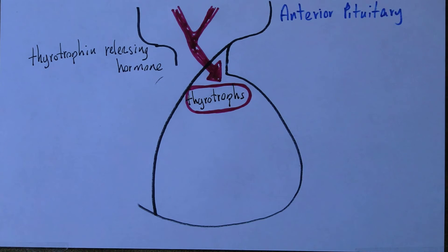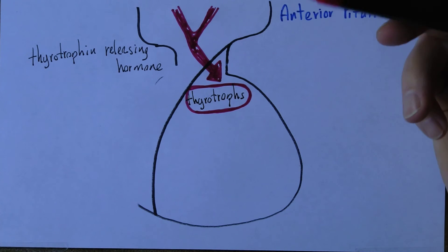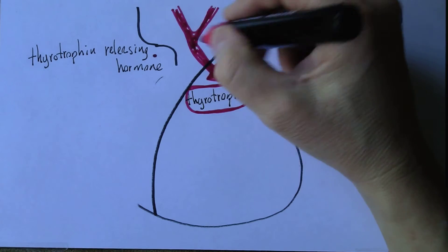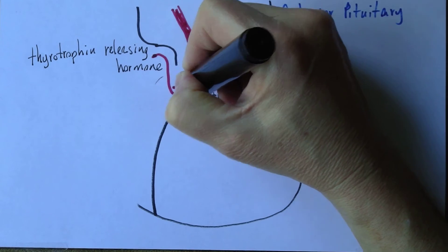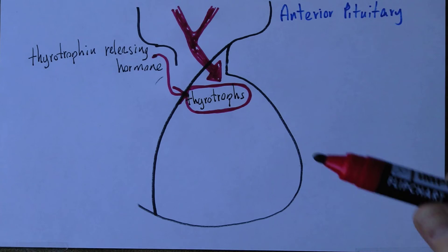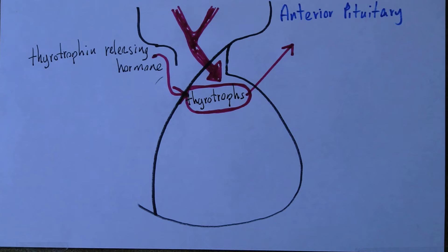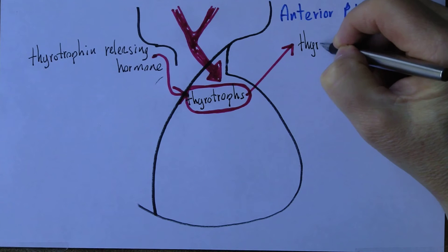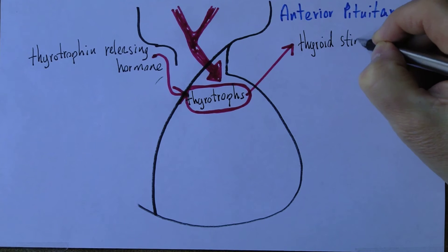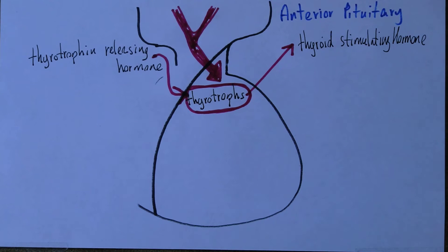Thyrotrophin-releasing hormone, produced in the hypothalamus, travels down the portal system and stimulates the thyrotrophs. You can imagine these thyrotrophs sitting there doing nothing until stimulated by thyrotrophin-releasing hormone, then they kick into action. What the thyrotrophs do is produce thyroid-stimulating hormone, which then goes off and stimulates the thyroid gland to produce thyroid hormone.